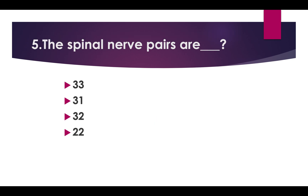The spinal nerve pairs are. Options: 33, 31, 32, 22. Answer: 31 pairs.